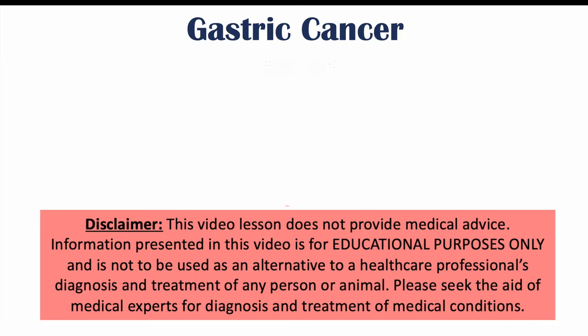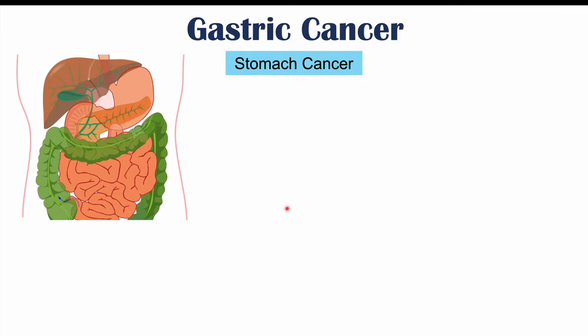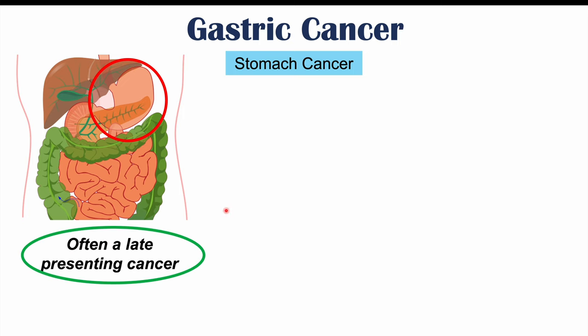This lesson is on the signs and symptoms of gastric or stomach cancer. We're going to talk about the signs and symptoms that are most common for stomach cancer, why they occur, and also some of the signs and symptoms that occur with metastases of stomach cancer. Before we talk about those signs and symptoms, let's talk about what stomach cancer is.